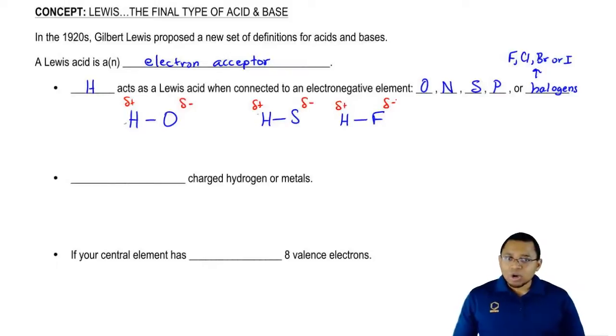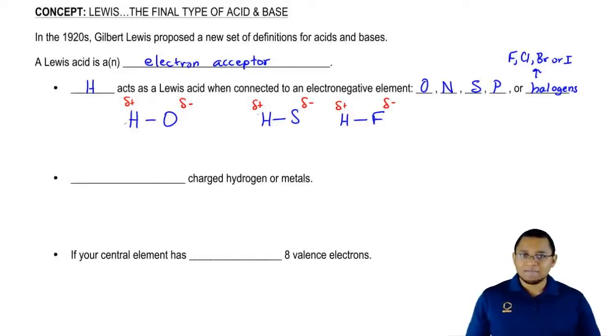And think about it. Electrons are negatively charged. Since they're negatively charged, they'll be attracted to something that's positive or partially positive. That delta positive means it's partially positive, a little bit positive. So in this case, H can act as a Lewis acid.